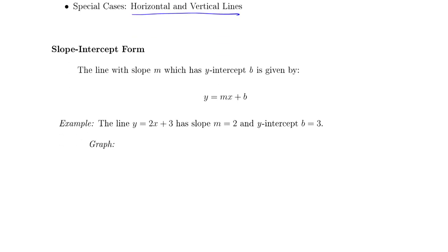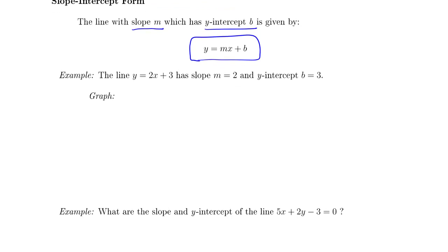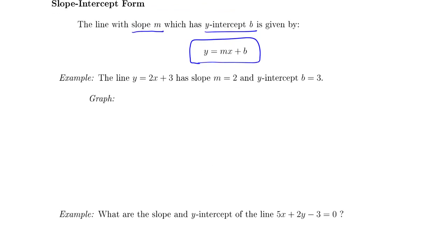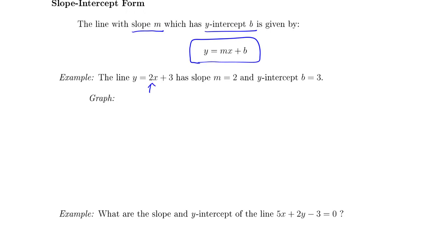The slope-intercept form is the one we see most often, and that's y equals mx plus b—that's the slope m and the y-intercept b. We can see very clearly if we have a line in the slope-intercept form, it's very easy to pick out the slope because that's just what's multiplying x, and it's very easy to see the y-intercept—that's just the number being added on at the end.